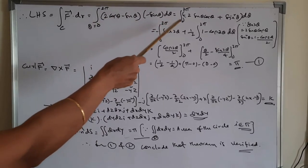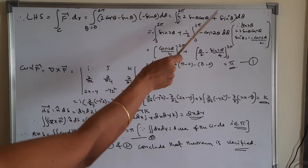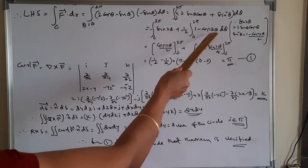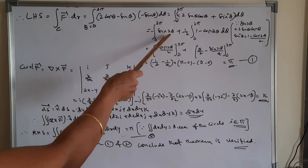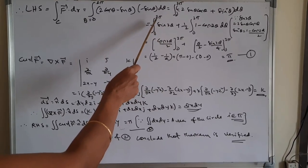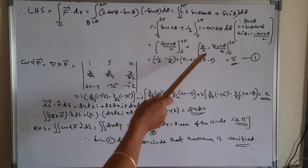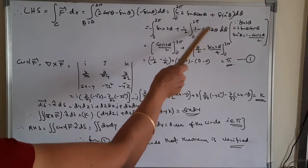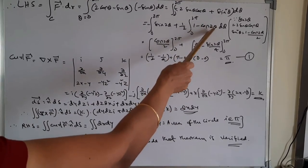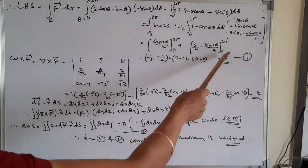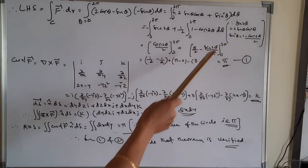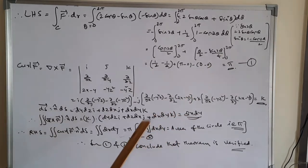Expanding: −2sinθ cosθ = −sin2θ and sin²θ = (1 − cos2θ)/2. Integrating: −cos2θ/2 and θ/2 − sin2θ/4, with limits 0 to 2π. Substituting the limits (upper minus lower), the value simplifies to π. This is equation (1).